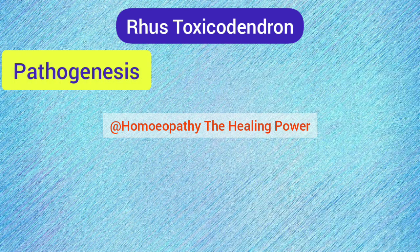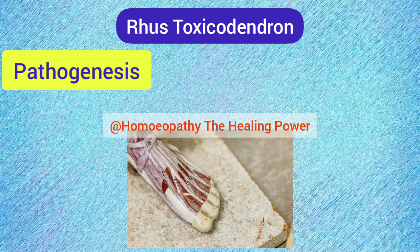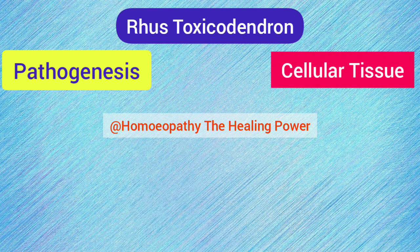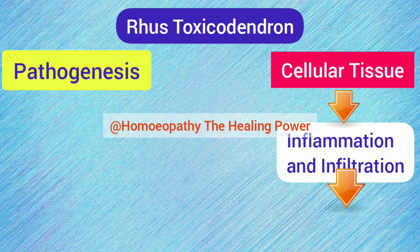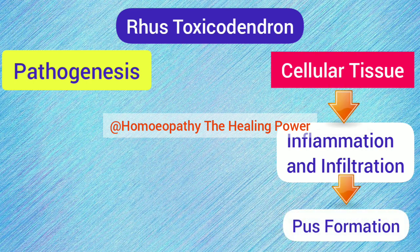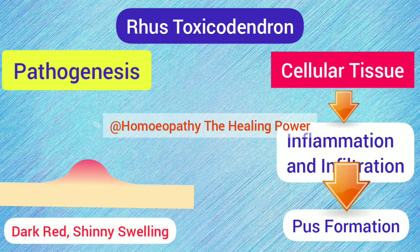In the pathogenesis of Rhus Tox, as seen in its sphere of action, it has special action on joints. By acting on cellular tissues, Rhus Tox first produces inflammation and infiltration — for example, in glands, on cells, on serous membranes. This inflammation easily converts into pus formation, and the affected part looks shiny with a dark red color.